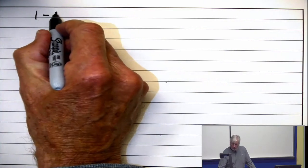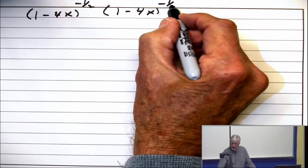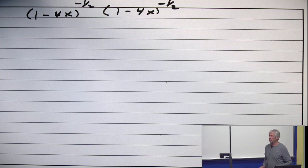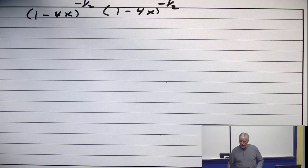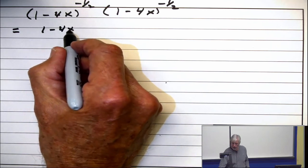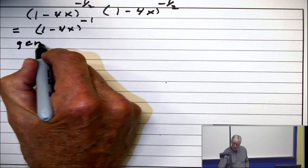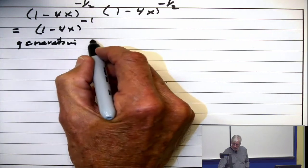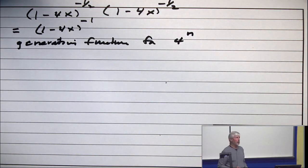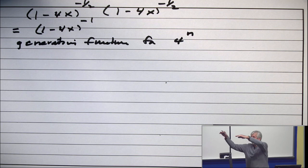I'm going to take 1 minus 4x to the minus 1 half and multiply it by 1 minus 4x to the minus 1 half. Now, to show you how good my algebra skills are, I'm going to do this twice. First way, minus 1 half, minus 1 half, this is 1 minus 4x to the minus 1. And that's the generating function for 4 to the n. Because 1 over 1 minus 4x is 1 plus 4x plus 16x squared plus 64x cubed plus, etc.